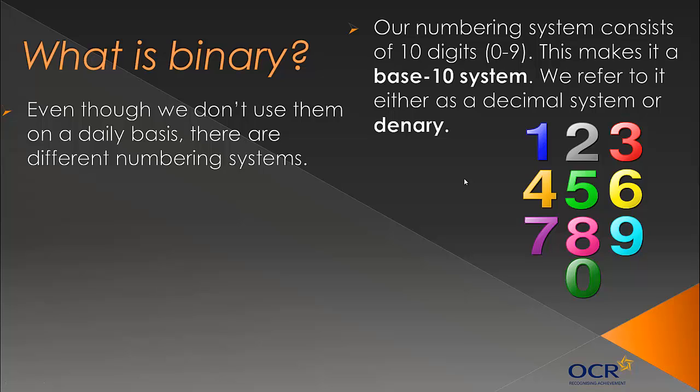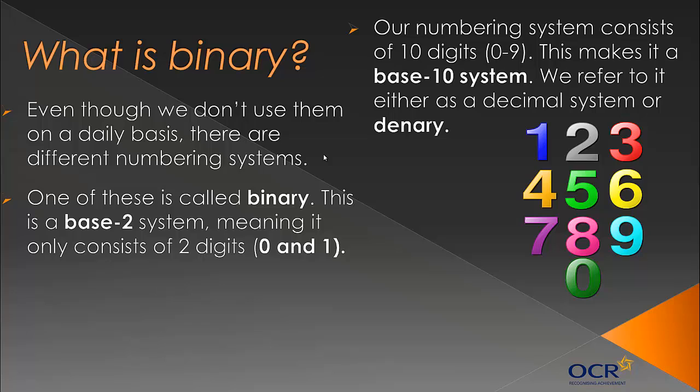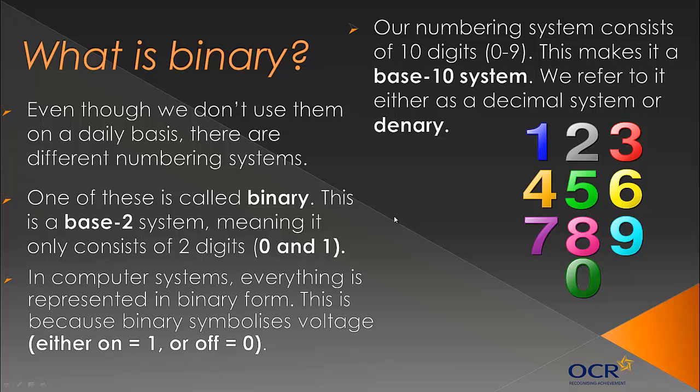So binary, even though we don't use it on a daily basis, there are actually many numbering systems, base 15 called hexadecimal which we'll look at again in the future. There are other numbering systems and one of which is called binary and this is a base 2 system meaning that it only consists of 2 digits, 0 and 1. And computers use these because it symbolizes voltage. Everything in a computer is represented in binary form. The CPU only works with binary. Everything to do with computers is either off or on because that's how voltage works. Often the symbol for a light bulb on a light switch is just a straight line and then 0, and that is representing the binary equivalent which is just 0 and 1.